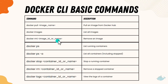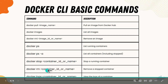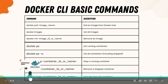To remove an image, you can use `docker rmi`. To see running containers, use `docker ps`. To see all containers including stopped ones, use `docker ps -a`. You can stop a container using `docker stop` with the container ID or name, remove a stopped container with `docker rm`, and view container logs with `docker logs`.